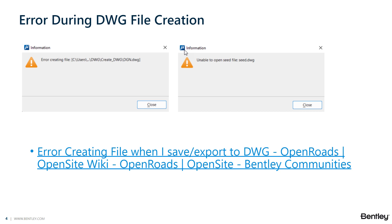Another solution is that the DGN file might have an issue with a bad reference file. References might be being merged or maintained, and there is always the potential that a reference file could be causing the problem. You can either try to turn off the display of the reference before converting the file to DWG, or make a copy of that DGN file and simply detach the reference files to see if it would then convert. If it does, you may need to check those reference files.